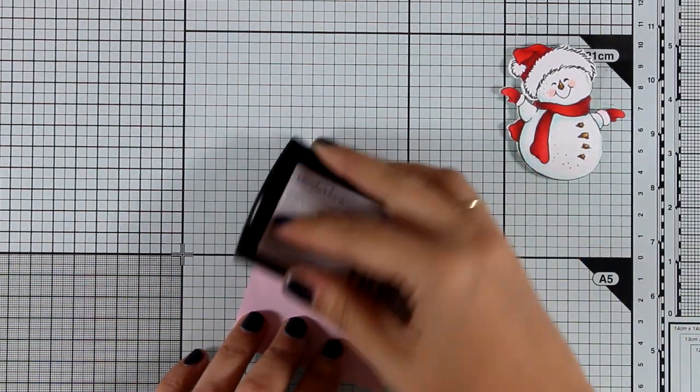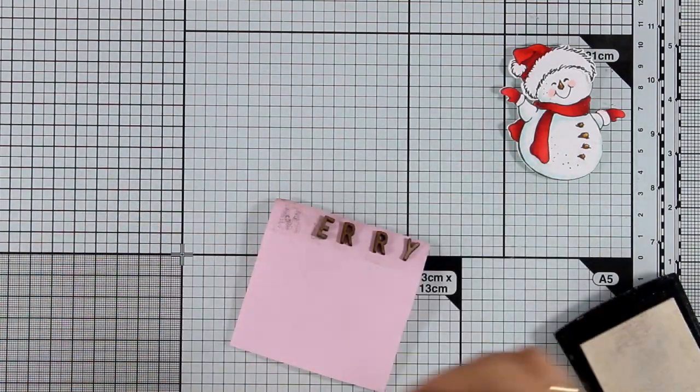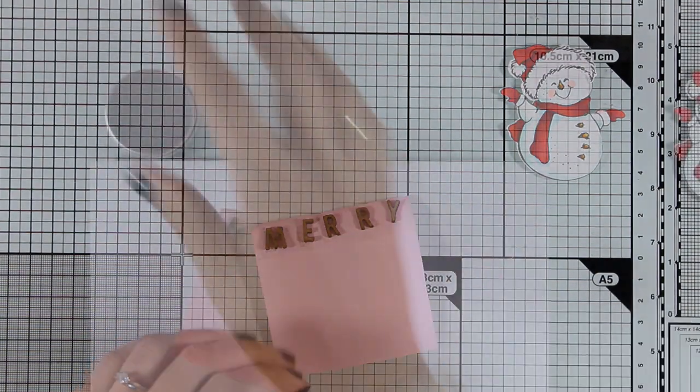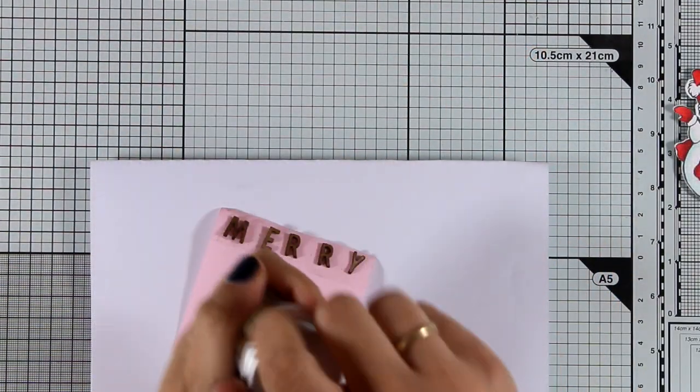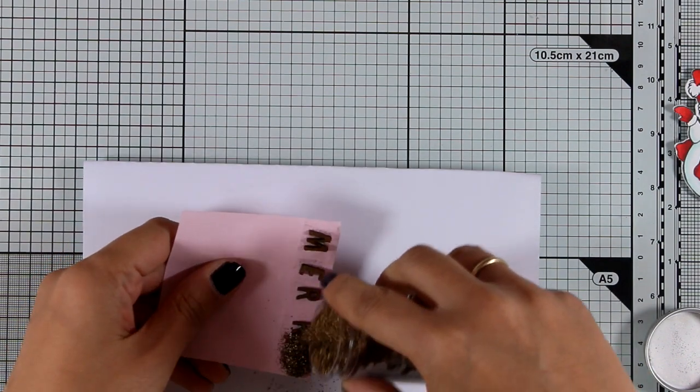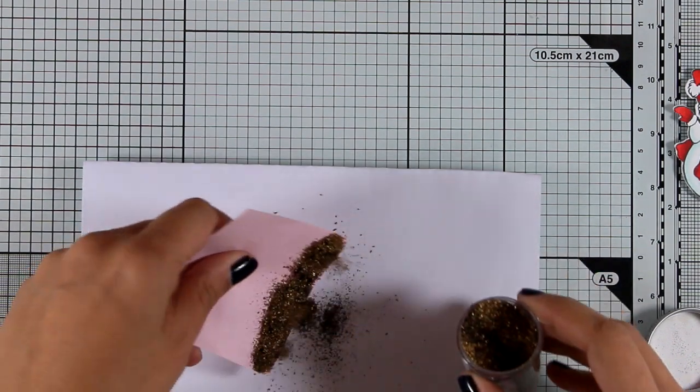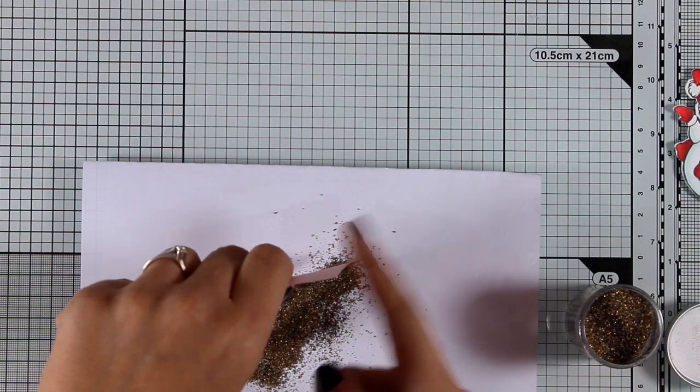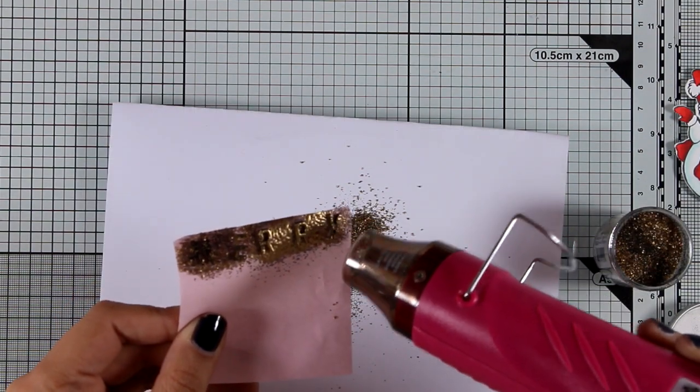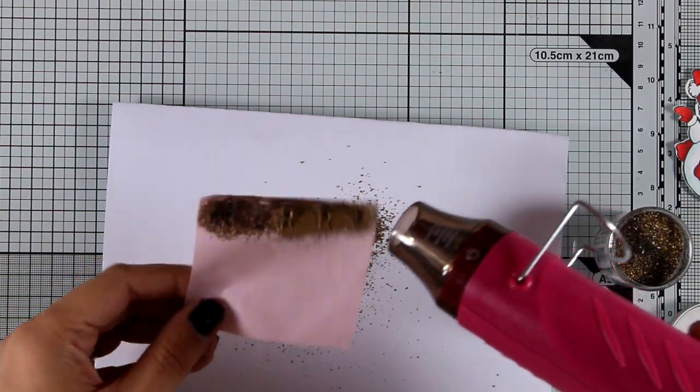I'm going to cover them up with Versamark and then apply some gold embossing powder. If you don't have wooden letters like the ones I'm using, you can always die cut letters with any alphabet die set, or you can even use different bits and pieces like little sequins. You can even use little stars, cut out stars, and create a garland out of them. So many ideas.